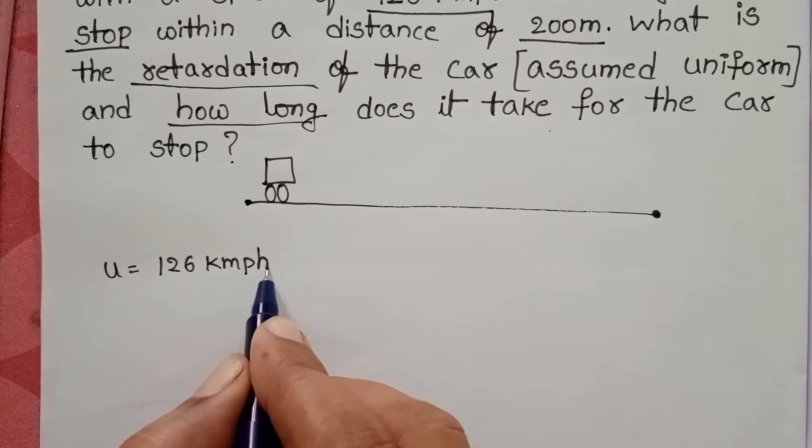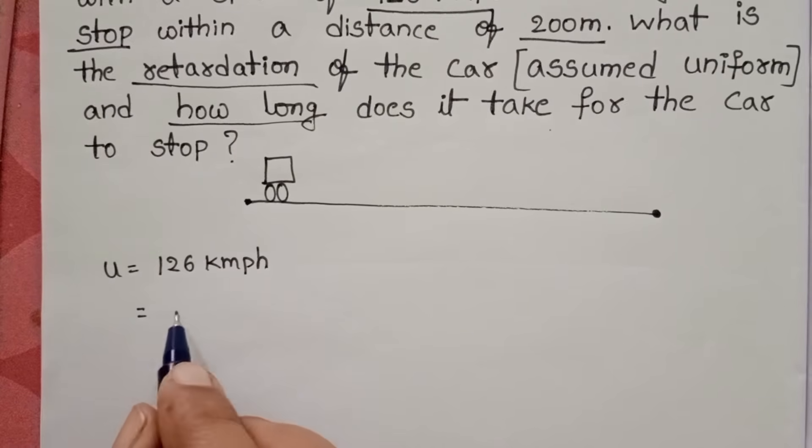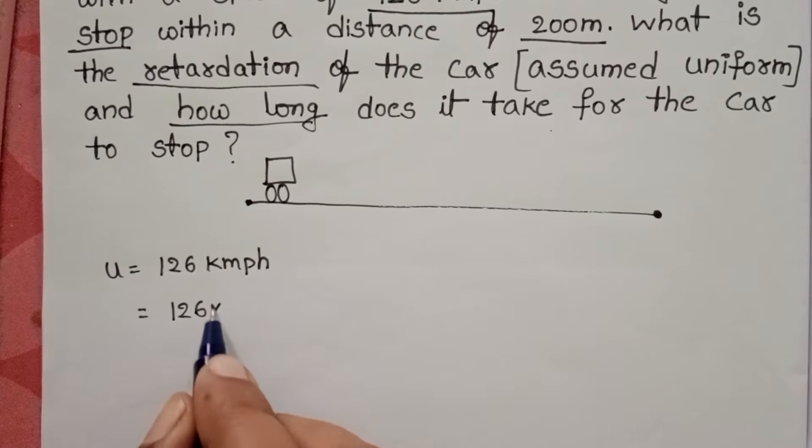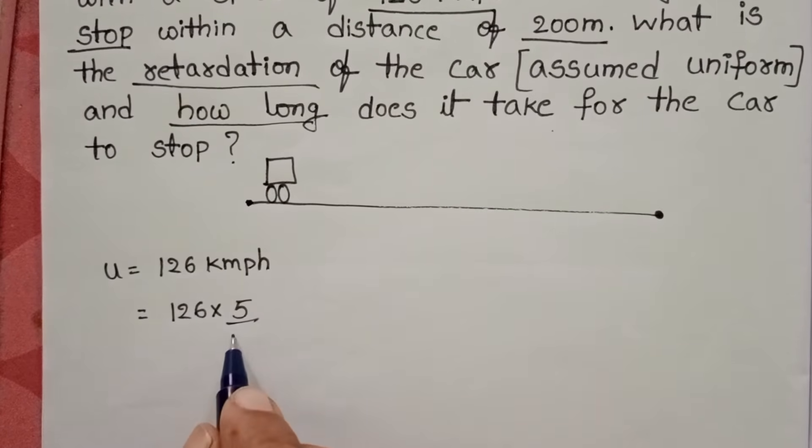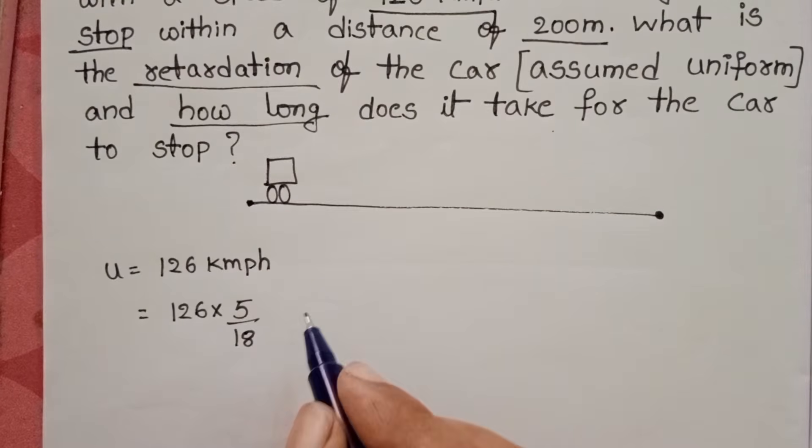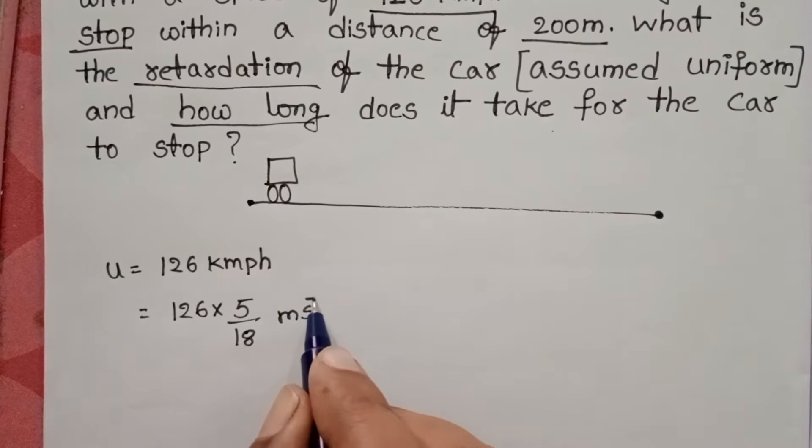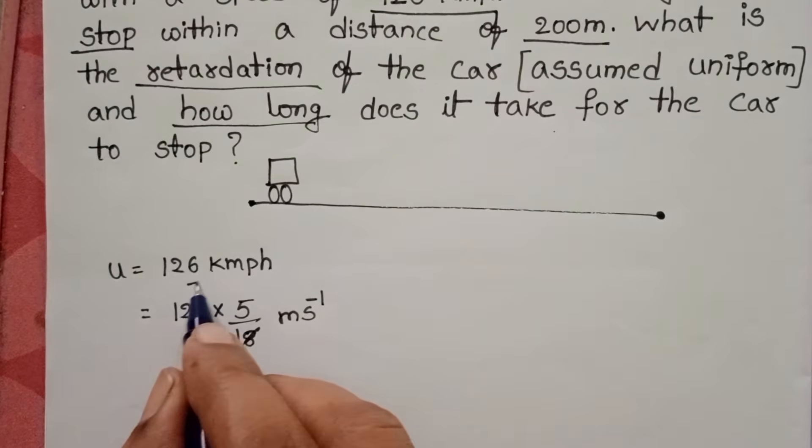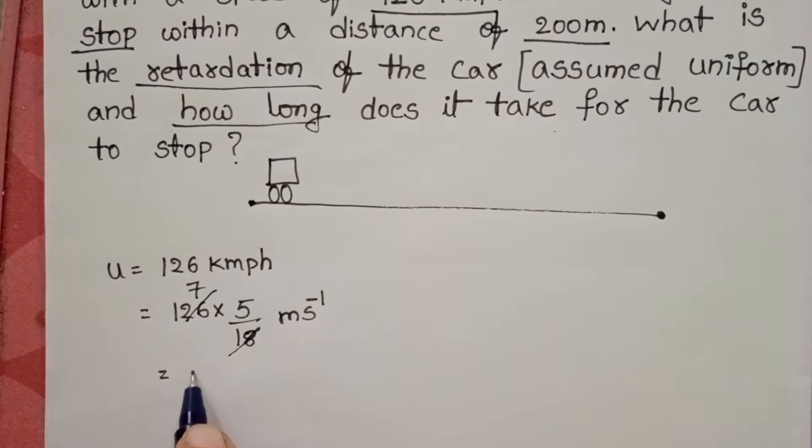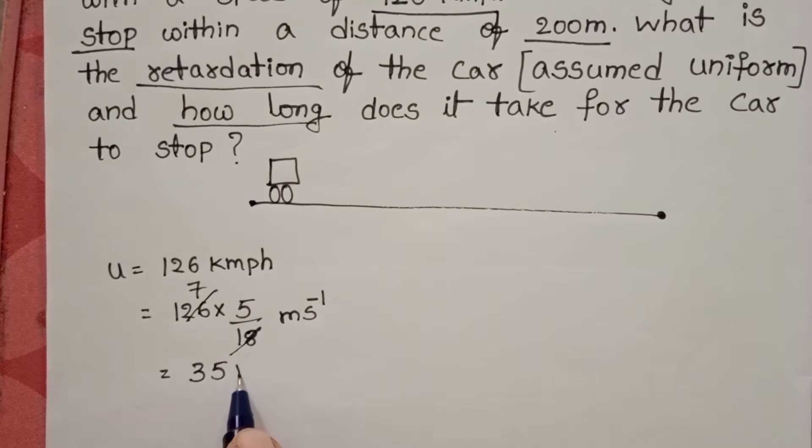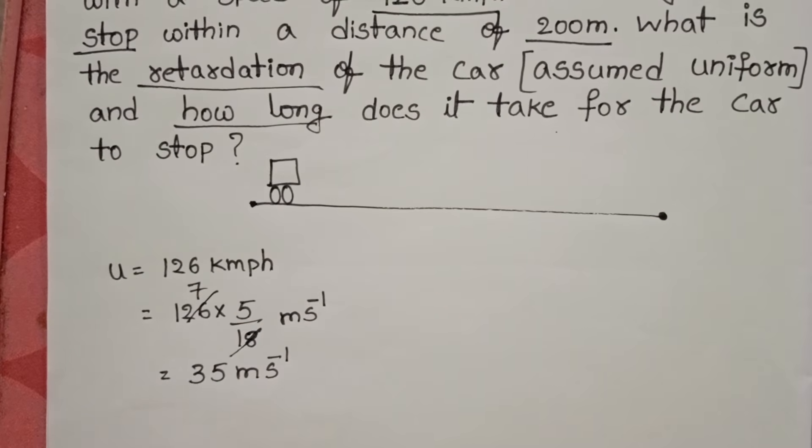First convert this value into meter per second. 126 times 5 by 18, since 1 km per hour equals 5 by 18 meter per second. 18 ones, 18 sevens, 7 fives, 35. Initial speed is 35 meter per second.